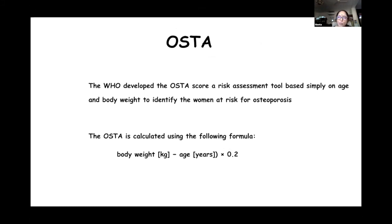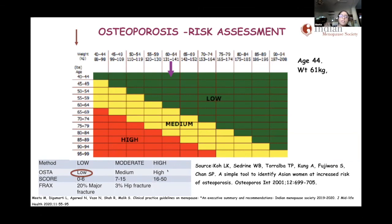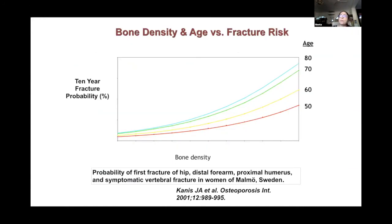The simpler tool promoted in India is OSTA — Osteoporosis Self-Assessment Tool for Asians — using the formula: (body weight minus age) multiplied by 0.2. You can use the formula or a simple chart plotting age against weight, dividing into low, medium, and high risk. If a woman is low risk, only 3% of such women would actually have osteoporosis — meaning 97% can confidently skip BMD testing. If high risk, 60% would probably have osteoporosis and all should go for BMD. Even moderate risk women need BMD.